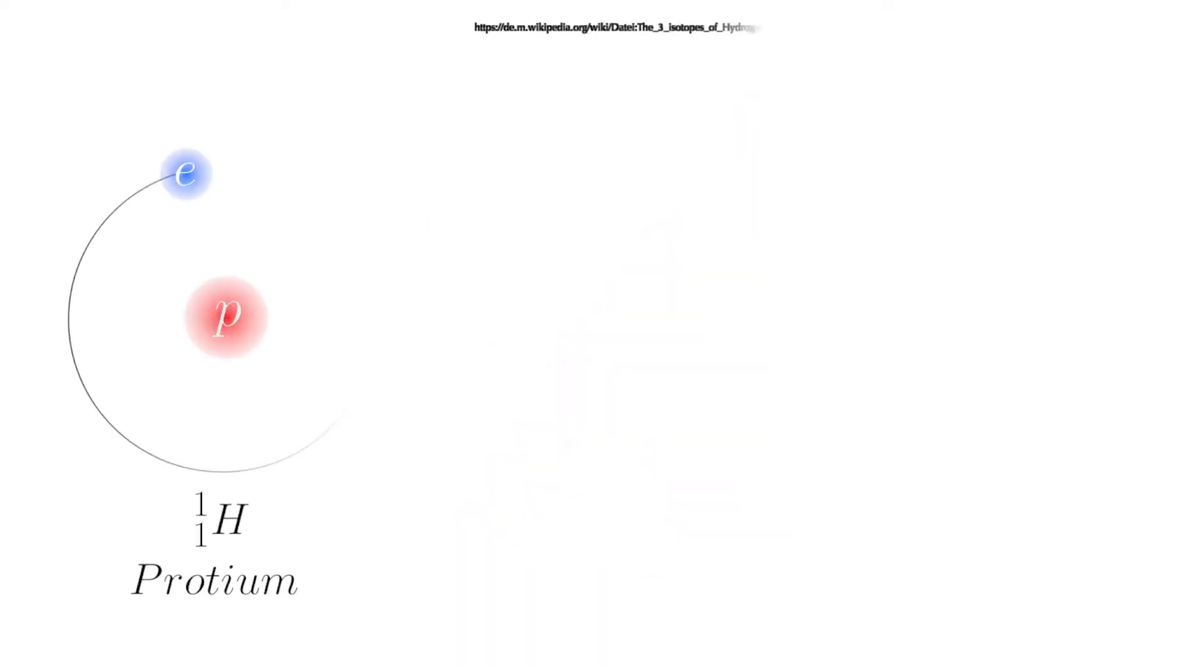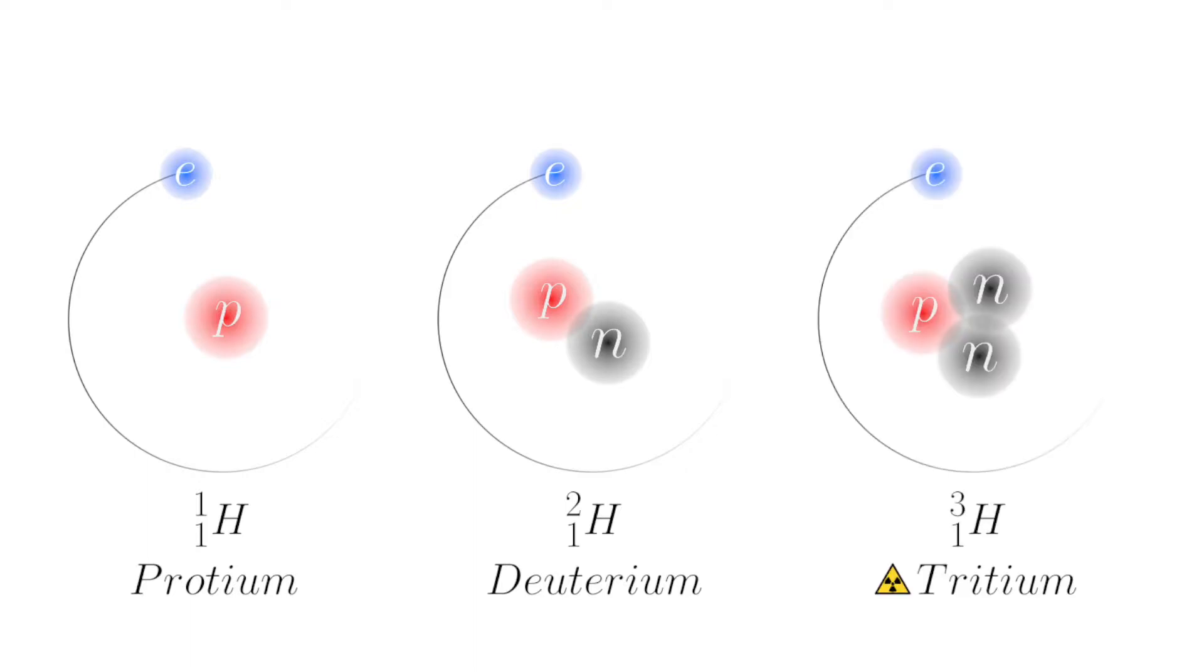Hydrogen is the first element in the periodic table. A hydrogen atom consists of one proton, one electron, and in the case of isotopes none, one, or two neutrons. The simplest isotope of hydrogen is protium, also called pure hydrogen.